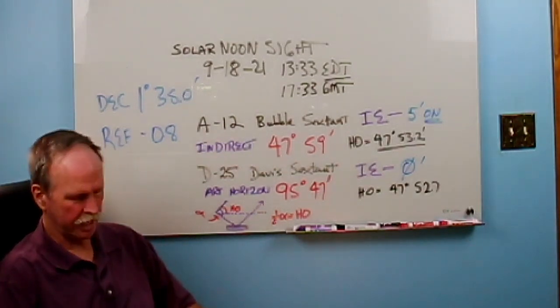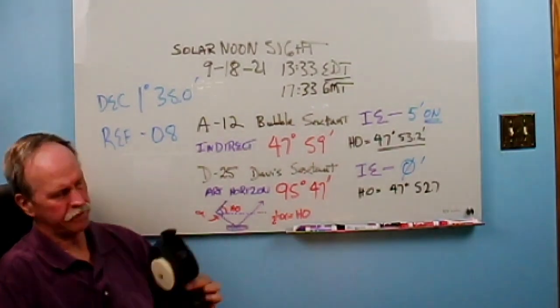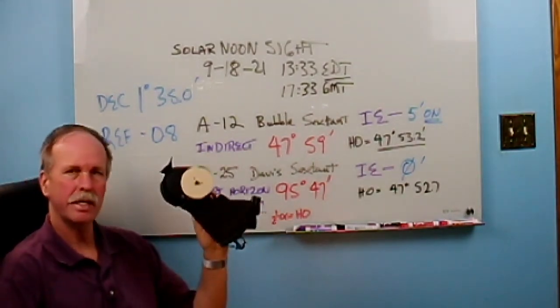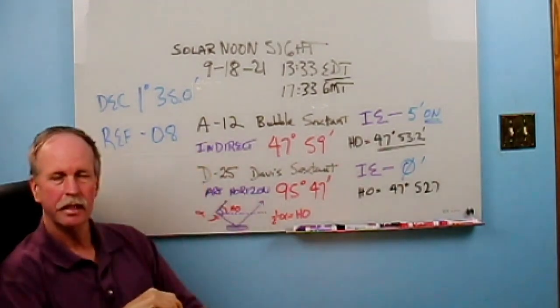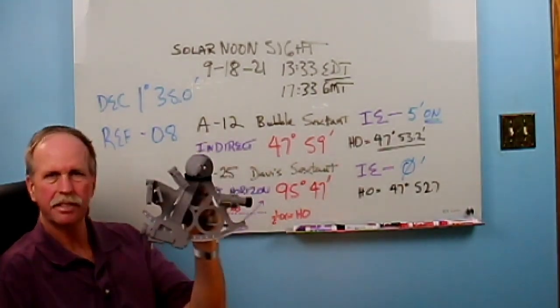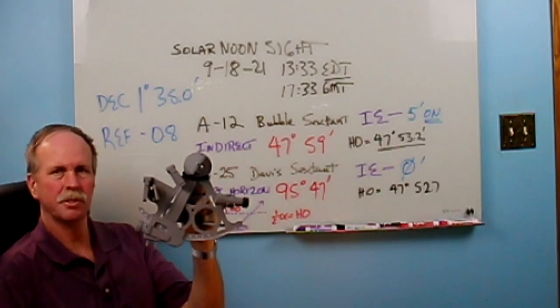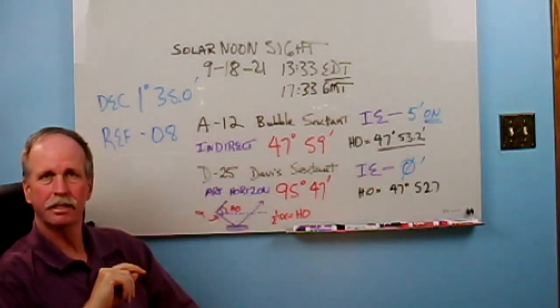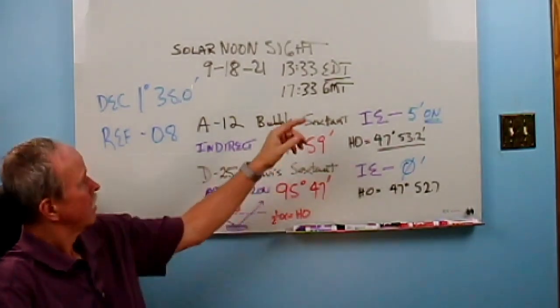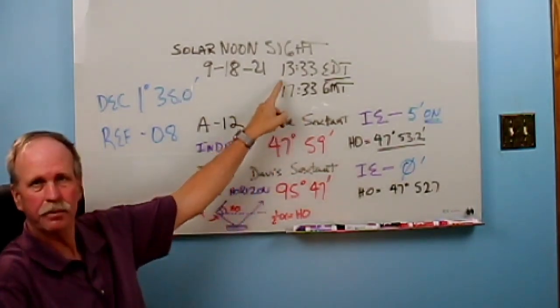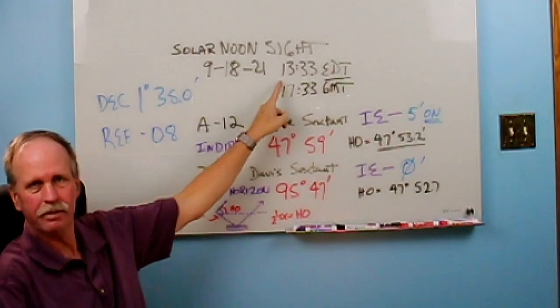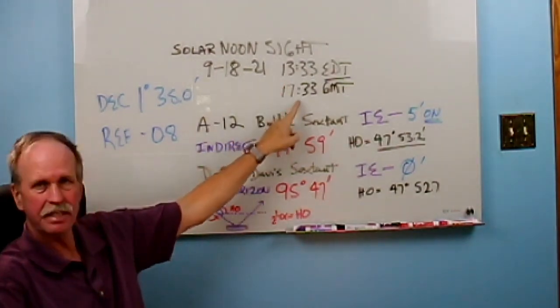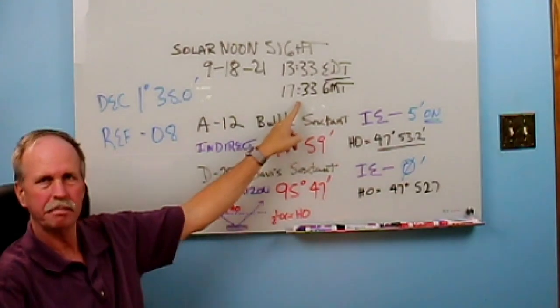So today I went outside and I did two noon sights. The first was with the Link A12 bubble sextant, and then I used a Davis Mark 25 nautical sextant. Now, solar noon today, September 18th, 2021, was at 1333 hours Eastern Daylight Time, and that's 1733 Greenwich Mean Time.